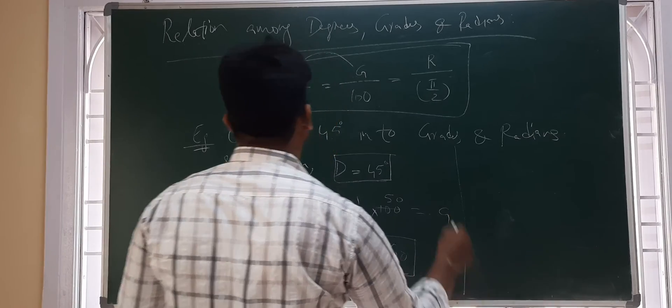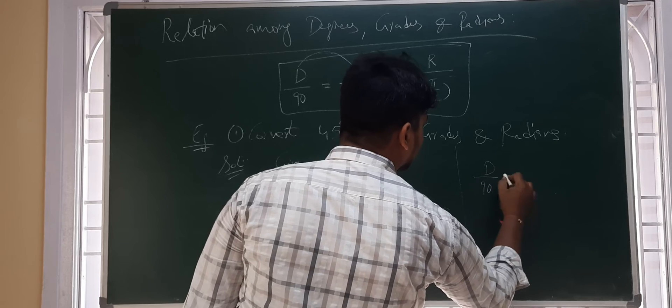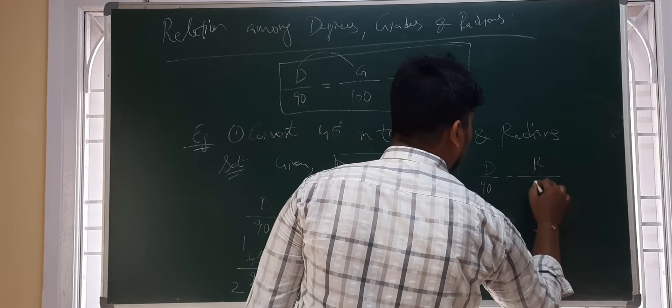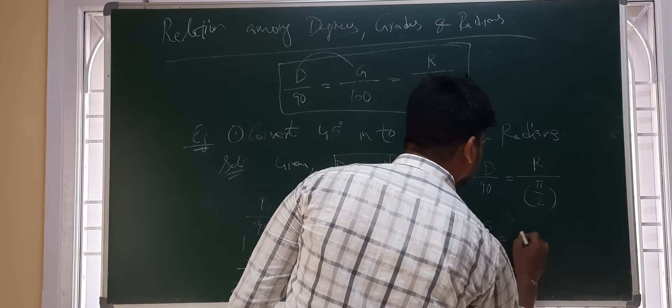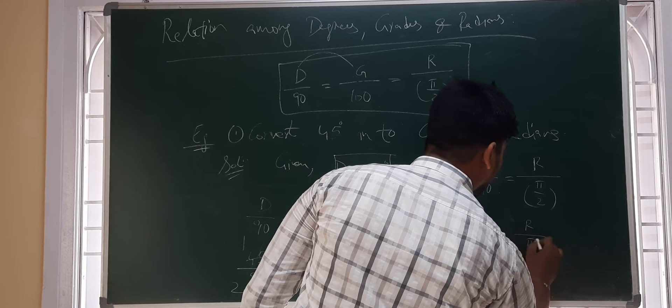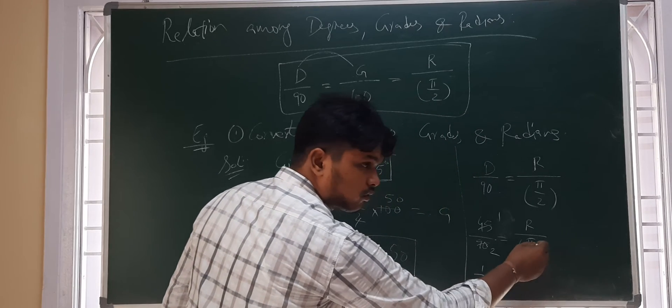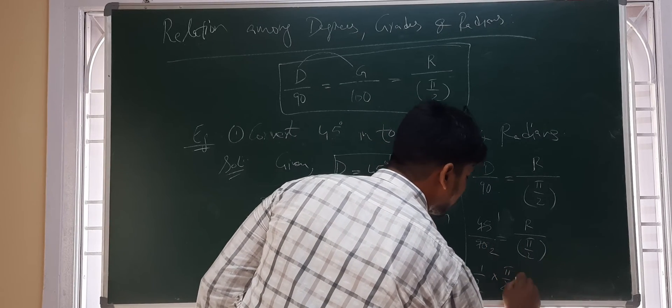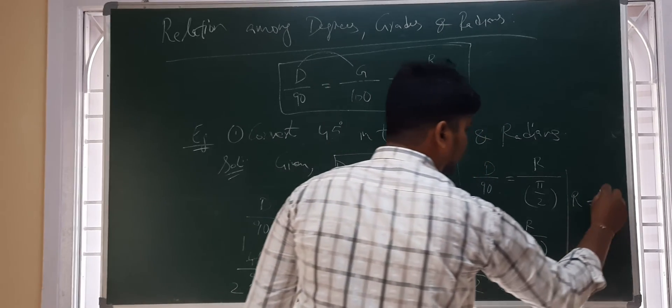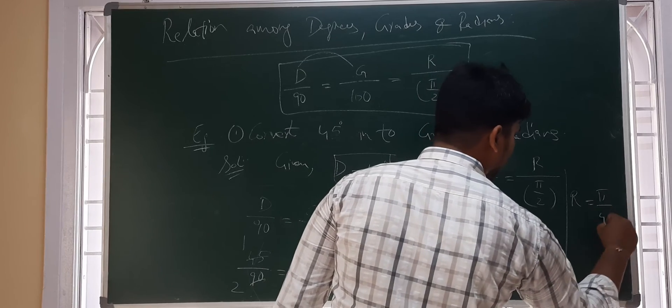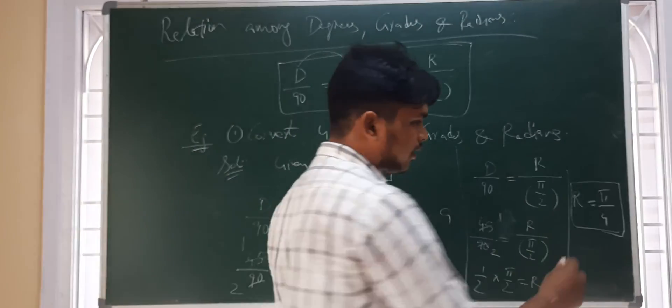Similarly, if I want to convert degrees into radians, I use the relation D by 90 is equal to R by pi by 2. 45 by 90 is equal to R by pi by 2. 1 by 2. By pi by 2 if it goes to RHS, into pi by 2 is equal to R. R is equal to pi by 4. So, 45 degrees is same as pi by 4 radians.